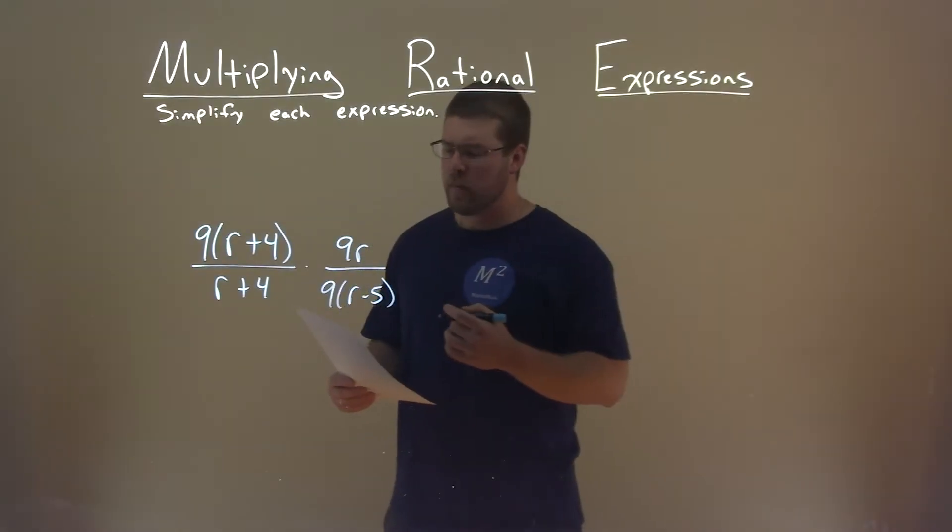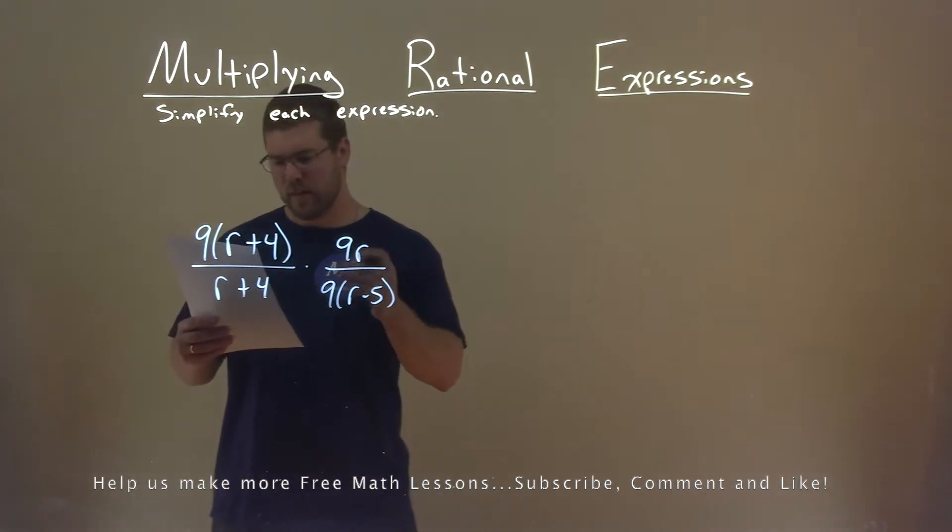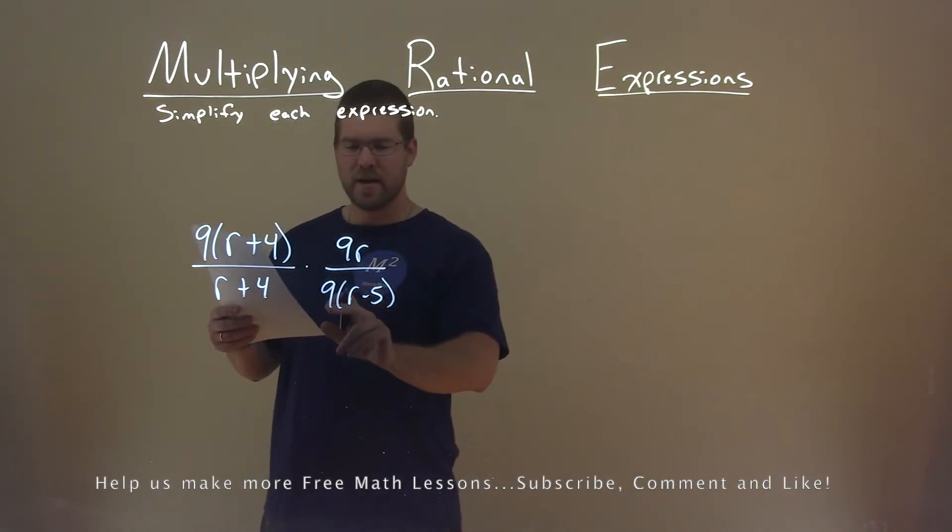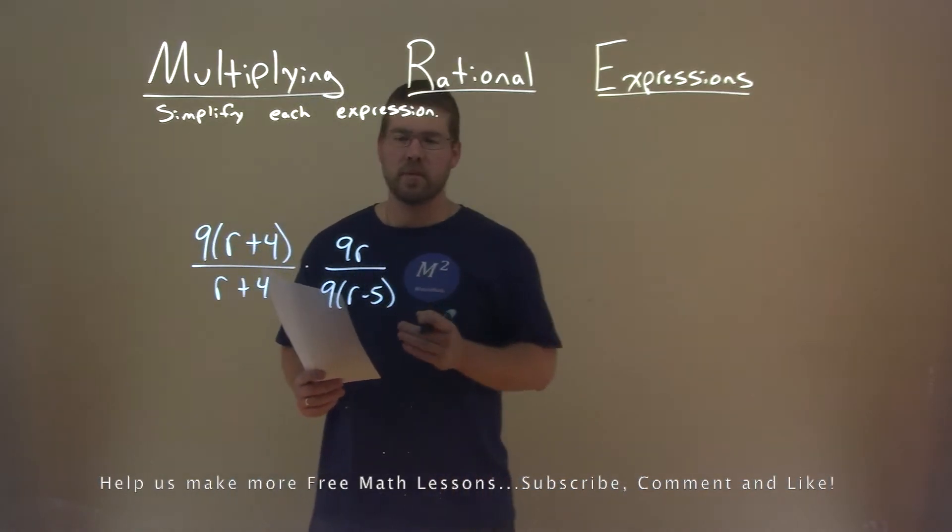We're given this problem right here: 9 times r plus 4, divided by r plus 4, times 9r, divided by 9 times r minus 5. And we need to simplify this expression.